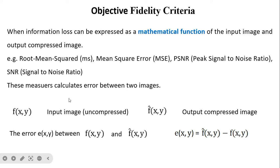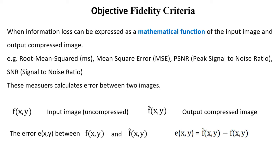In lossless compression, f(x,y) equals f_cap(x,y), but in lossy compression this is not the case. We need to measure the error between the uncompressed image and the compressed image. The error e(x,y) is the difference between f(x,y) and f_cap(x,y). We cannot simply use e(x,y) directly because the error can be positive or negative and they may cancel each other out.